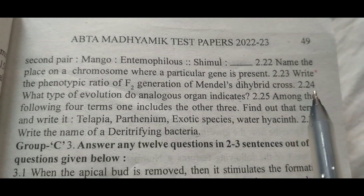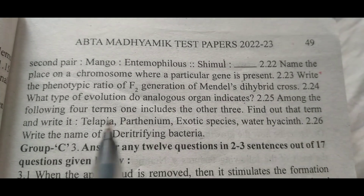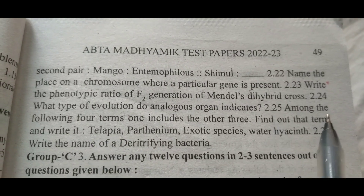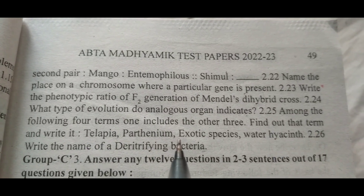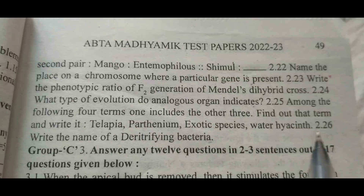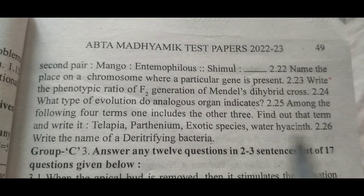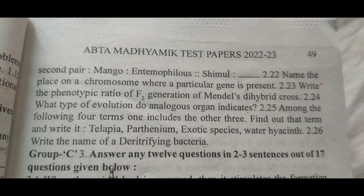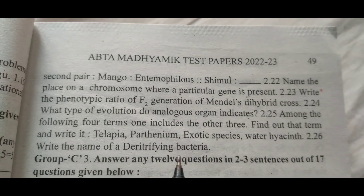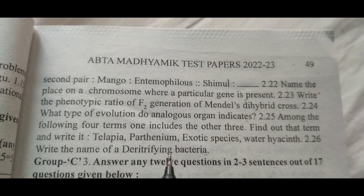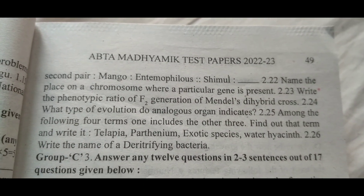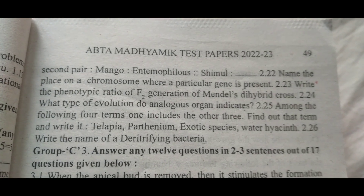2.24: Right answer will be Convergent. 2.25: Right answer will be Exotic species. 2.26: Right answer will be Thiobacillus or Pseudomonas — you can write any one, it will be right. I hope this video will be too much helpful to all of you. Thank you.